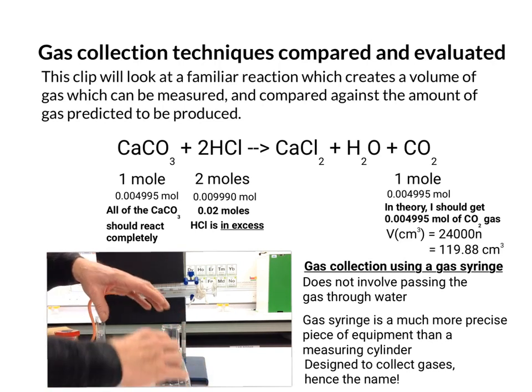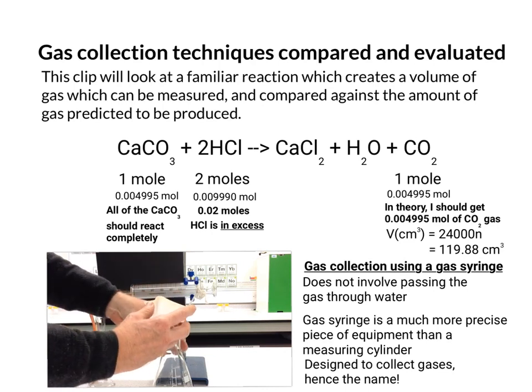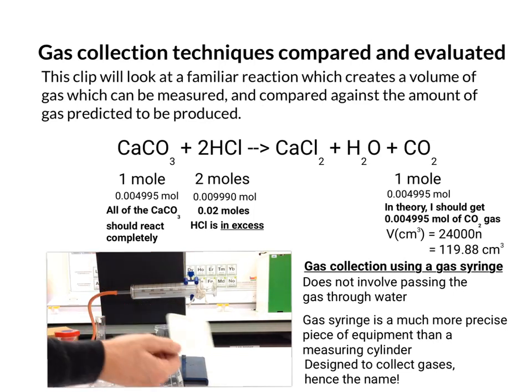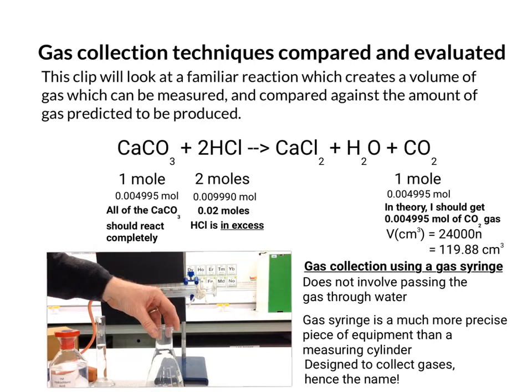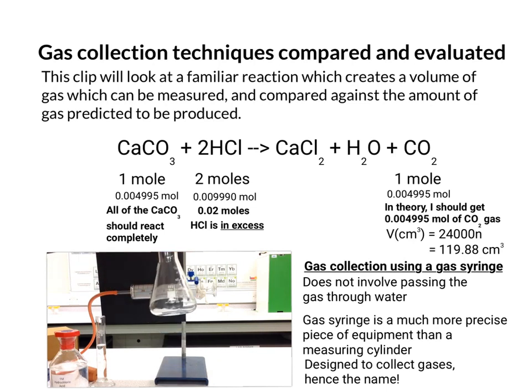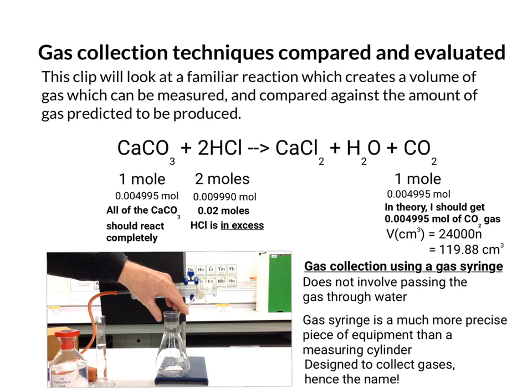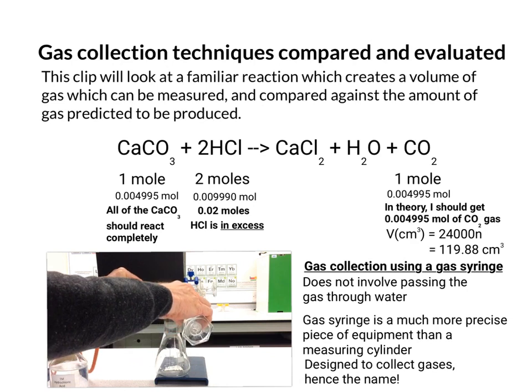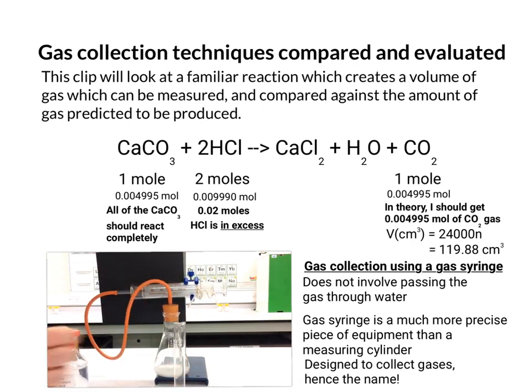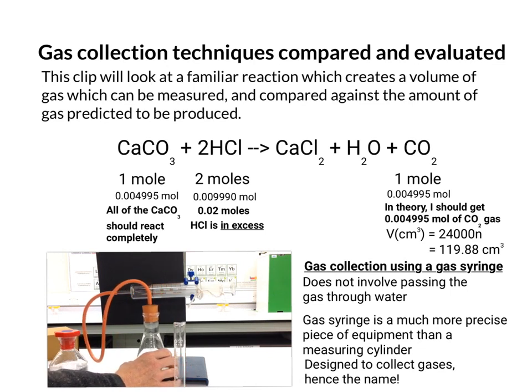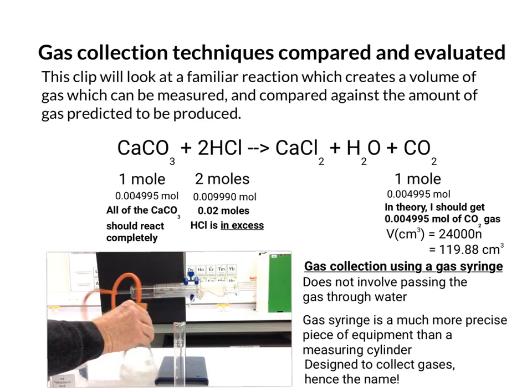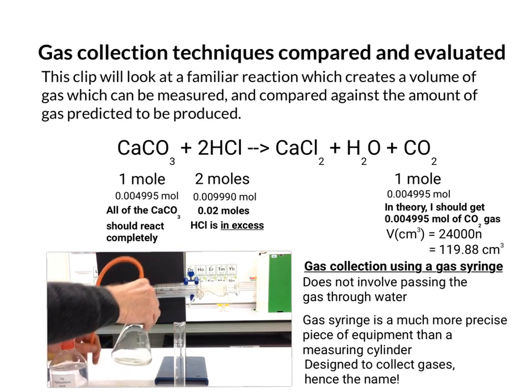So again I'm going to put my sample into the flask. Tapping it to make sure as much goes in as possible. So you can see it's in there. Pop it on a dark surface so you can see clearly the white powder. Again, pop the acid in. Quickly replace the bung and you can see the gas syringe start to move. So obviously the pressure of the gas is pushing the gas into the gas syringe. Shaking the flask as much as I can to encourage as much gas as possible to find its way into the gas syringe.